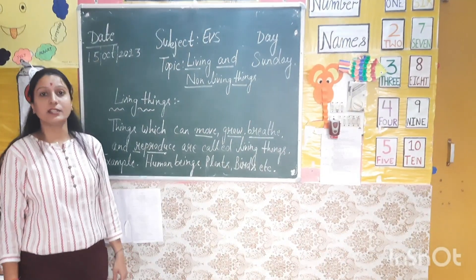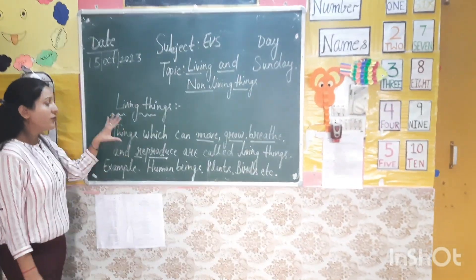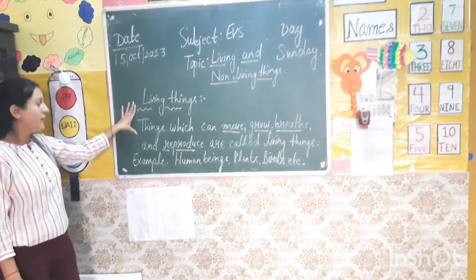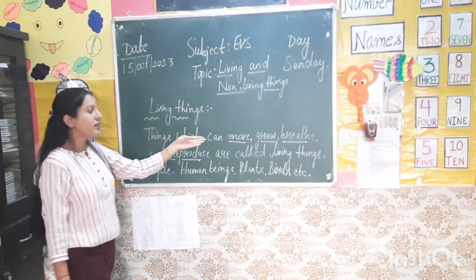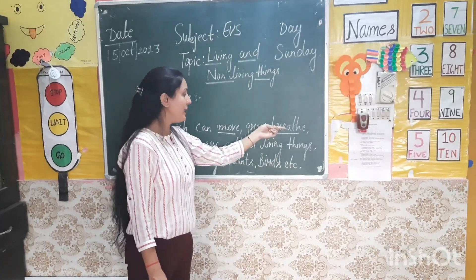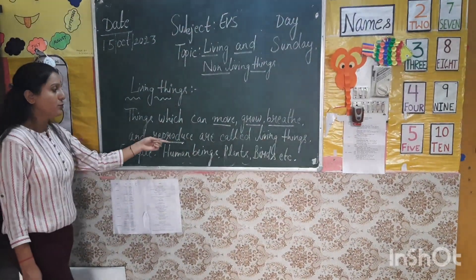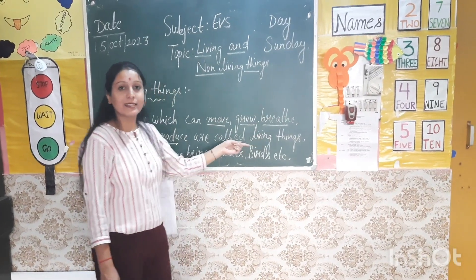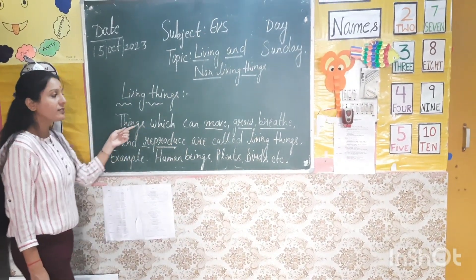Now children, starting from living things. First of all, the definition of living things is: things which can move, grow, breathe, and reproduce are called living things.